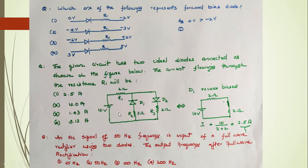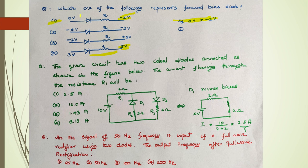MCQ Problem 1: Which of the following represents a forward biased diode? Analyzing the circuit: at zero volts compared to minus two volts on the other side, zero is more positive than minus two. Hence, we can say that option one represents the forward biased diode.